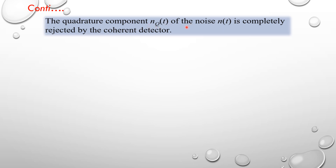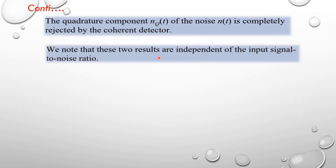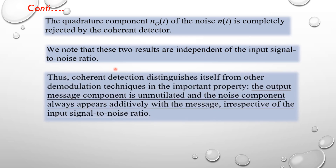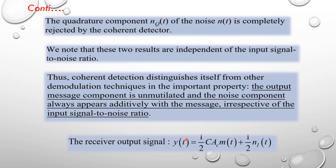The quadrature component n_q(t) of the filtered noise n(t) is completely rejected by the coherent detector. We note that these two results are independent of the input signal-to-noise ratio. Thus coherent detection distinguishes itself from other demodulation techniques: the output message component is unmutilated and the noise component appears additively with the message irrespective of the input SNR. A_c is the carrier signal amplitude and C is the constant factor.